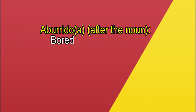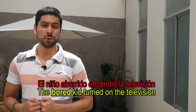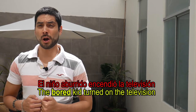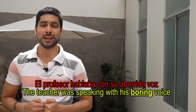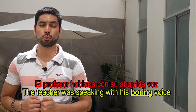Aburrido, or aburrida. When we put it after the noun, it means bored. And when we put it before, it means that the noun is boring. This might also be determined depending on the verb we use. For example, if we say 'Él está aburrido,' we are saying he is bored. But when we say 'Él es aburrido,' it means he is boring. So this is the difference between the verbs ser and estar according to this adjective. Examples: 'El niño aburrido encendió la televisión.' And: 'El profesor hablaba con su aburrida voz.'